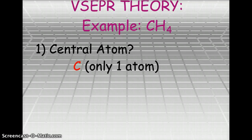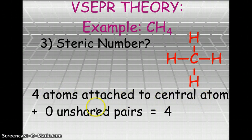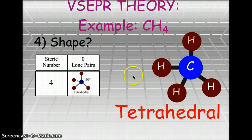Let's look at methane, CH4. Carbon is the central atom — it has four bonding sites and is the only single atom in the formula. In the Lewis dot or bar diagram, carbon is in the center with four hydrogens equally distributed around it. The steric number is four atoms attached plus zero unshared pairs, so steric number equals four. With steric number four and zero lone pairs, we get a tetrahedral shape, with each hydrogen at 109 degrees from the others — forming a pyramid on the bottom with one hydrogen at the top.